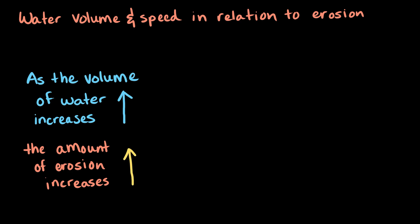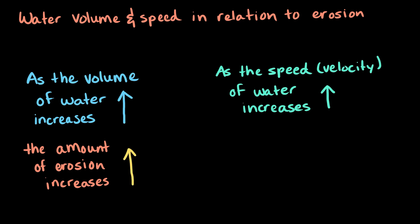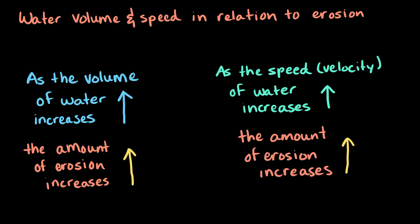The speed of the water flow also affects its erosional power. Simply put, faster moving water can carry more sediment. This relationship is one reason why fast-moving water causes more erosion than the same volume of slow-moving water.